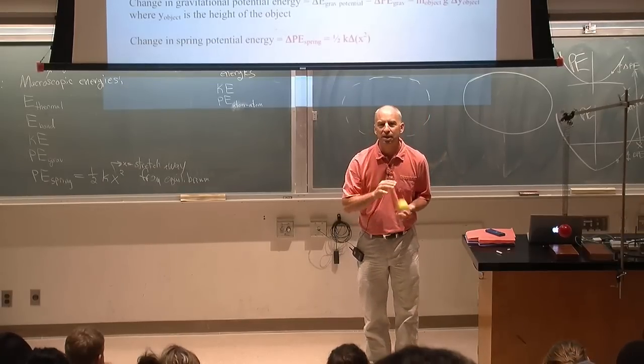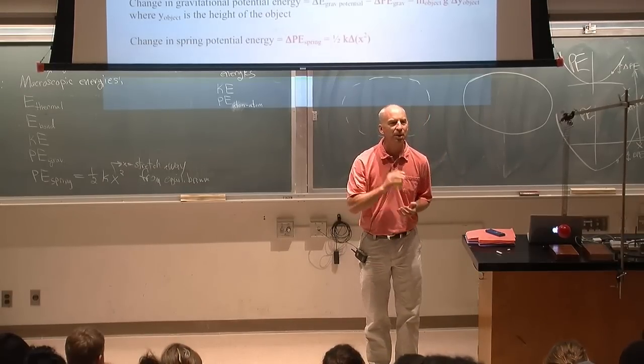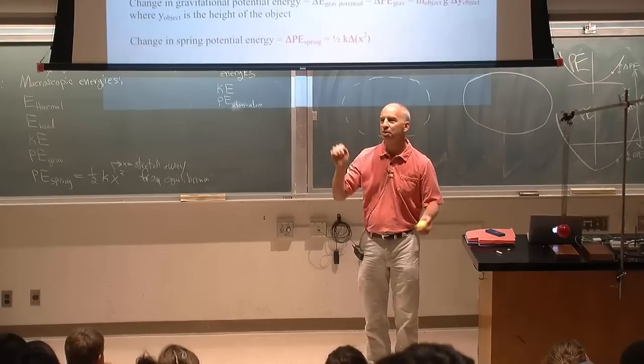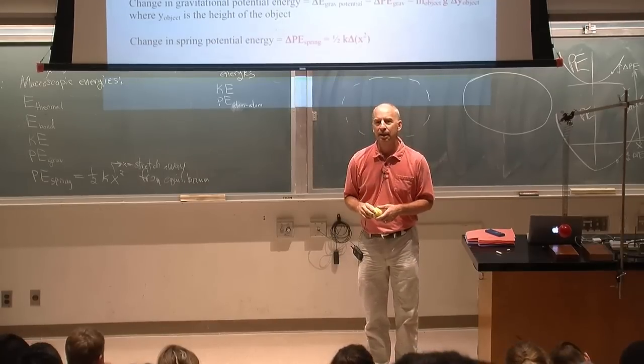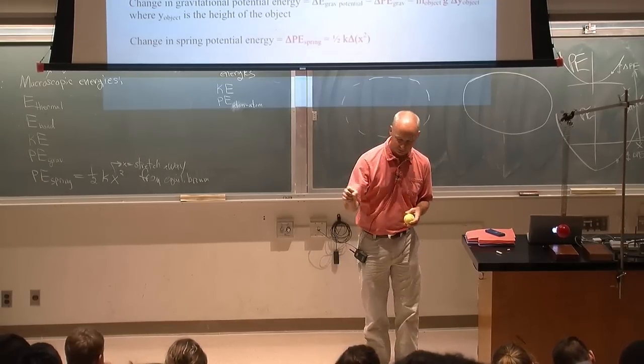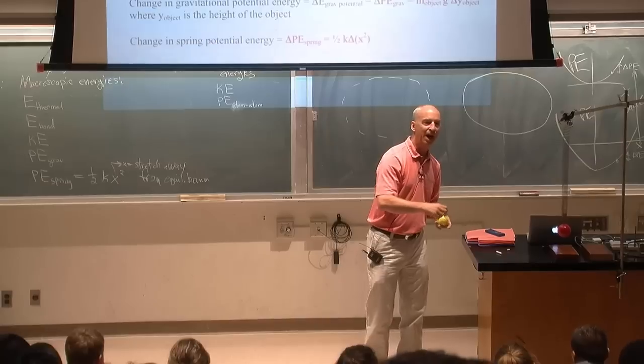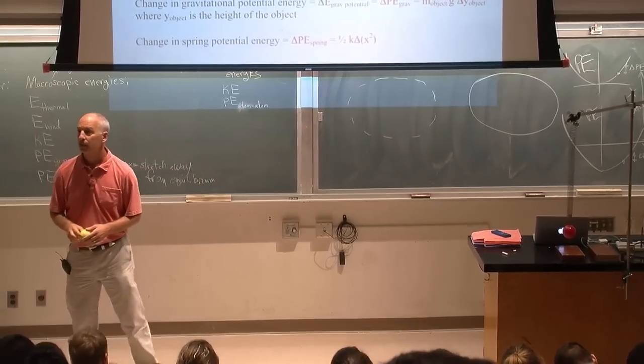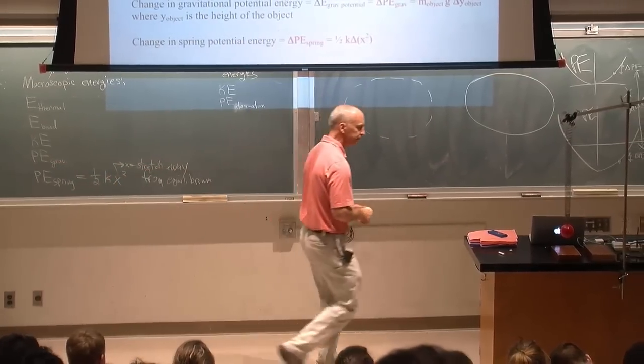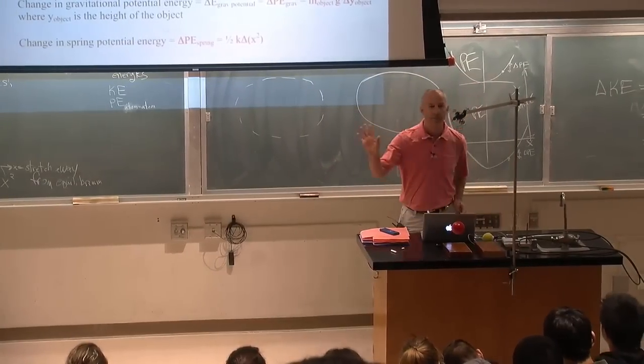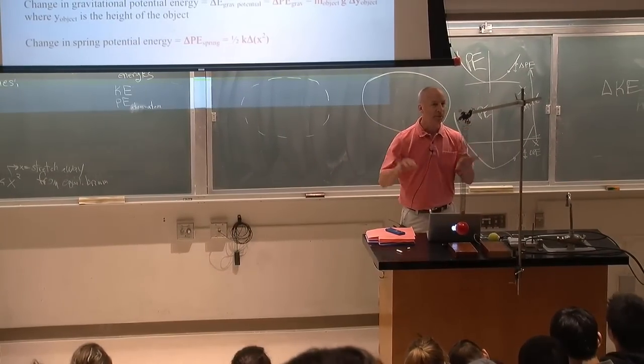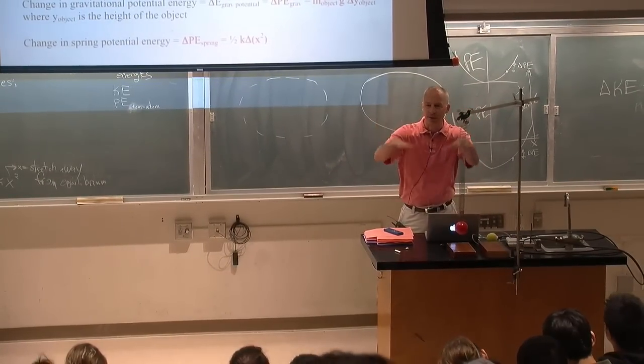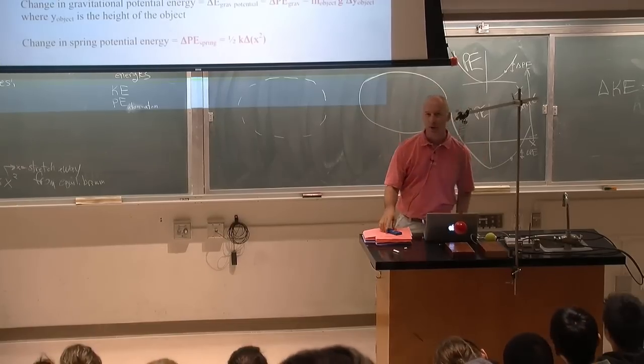I'll say that more than once because I know somewhere on a graph sometime, some of you are going to draw negative kinetic energies and some grader is going to go nope, not possible. Kinetic energies have to be positive. Potential energies doesn't matter, they can be positive or negative. You get to shift the zero around wherever you want it.